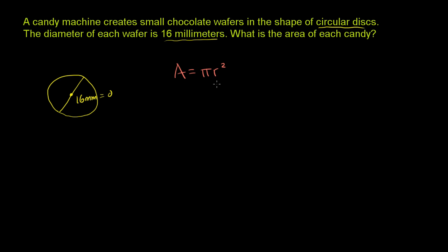r is the radius of the circle. So they told us the diameter of a circle, and the radius is just half of that, because the radius is half of a diameter. So the radius for this circle, for each of these wafers, is going to be 8 millimeters. So the radius, that part right there, is going to be 8 millimeters.